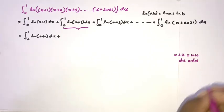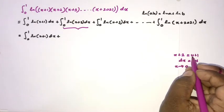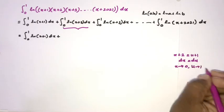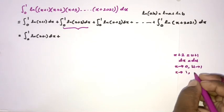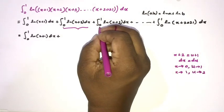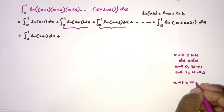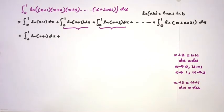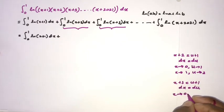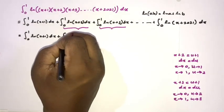Differentiating, dx equals du. We change the boundaries: when x approaches 0, u approaches 1; when x approaches 1, u approaches 2. Similarly for the integral of ln(x+3), we set x+3 equal to u+1, giving dx equals du, and boundaries u from 2 to 3.